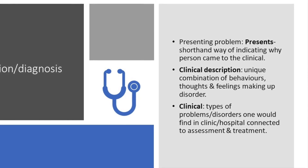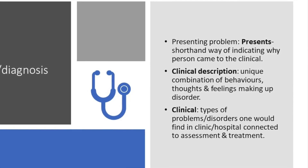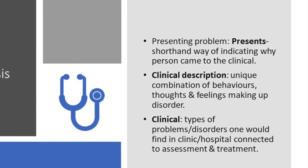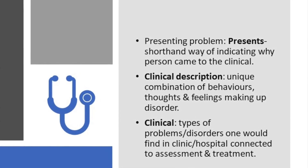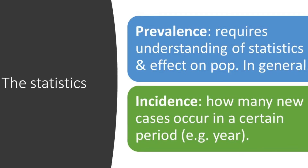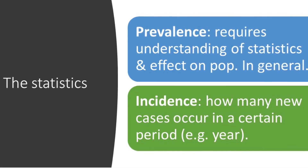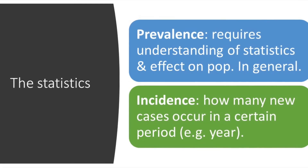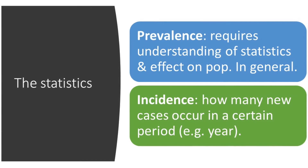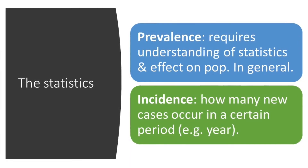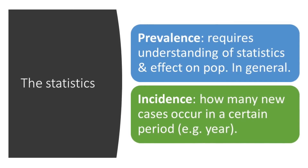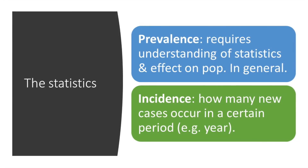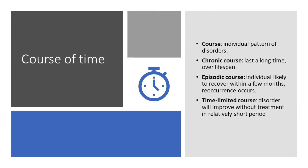A clinical description is a unique combination of behaviours, thoughts, and feelings that make up a disorder. Clinical refers to the types of problems and disorders found in a clinic or hospital, connected to assessment and treatment. Prevalence requires understanding statistics and the effect of an issue in the general population. Incidence refers to how many new cases occur in a certain period — for example, how many times a disorder occurs in a year. A course is defined as the individual pattern of a disorder.